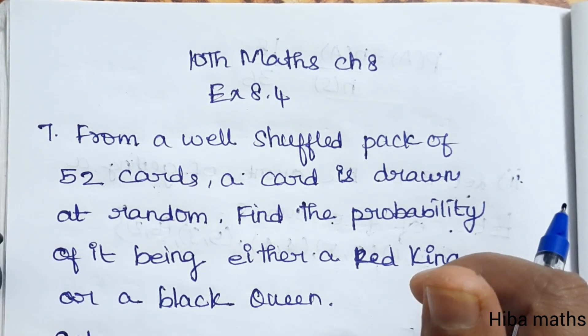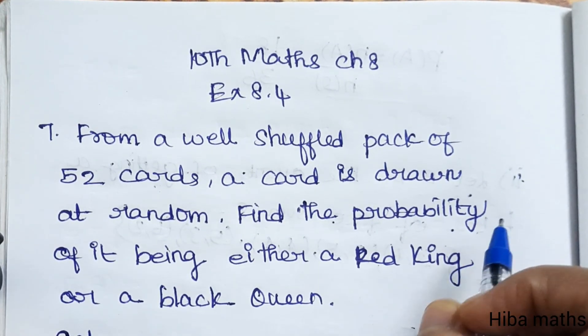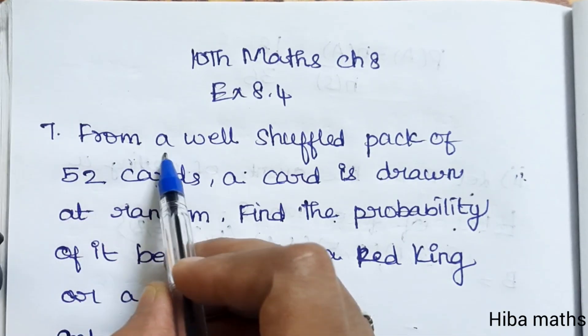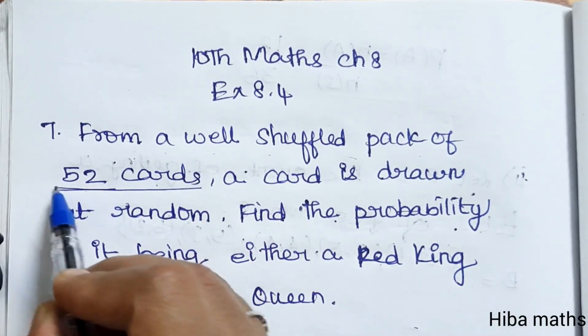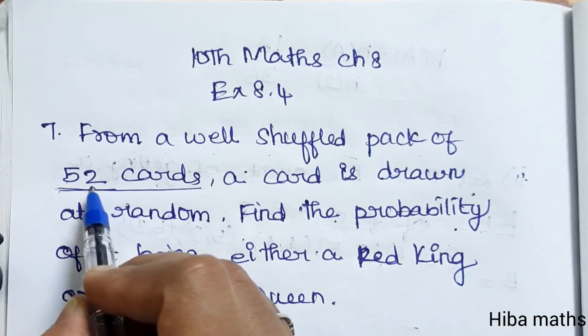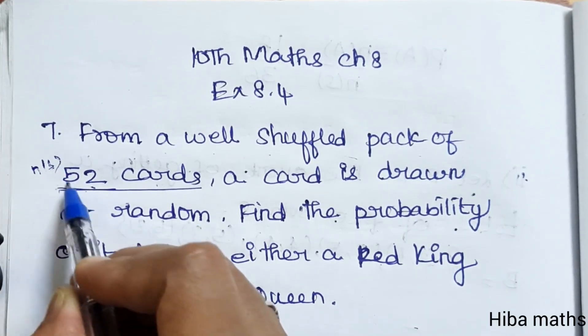Hello students, welcome to Hiba Maths, 10th Standard Maths Chapter 8, Exercise 8.4, 7th question. From a well shuffled pack of 52 cards - so total we have 52 cards. Now N(S) is 52.